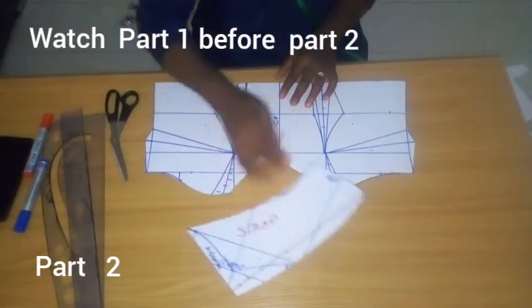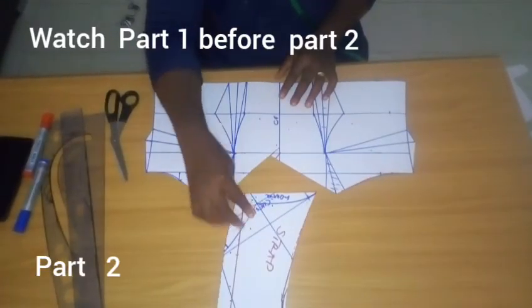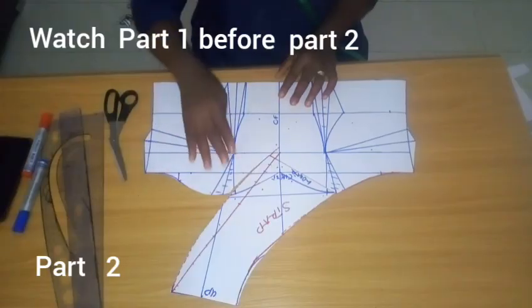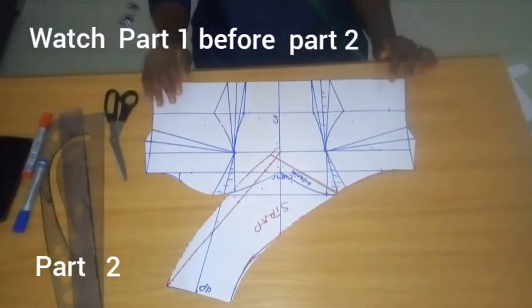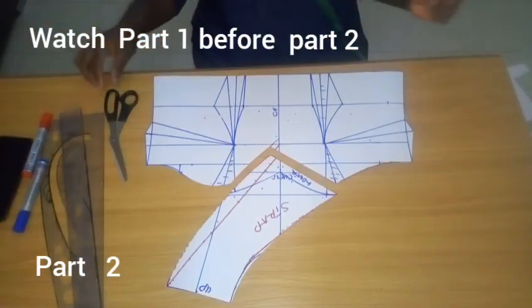This strap is going to be sewn like this after our bustier. Can you see that? So this is how it is sewn and embellished. You can see that. So that is why you need to draft your strap first.